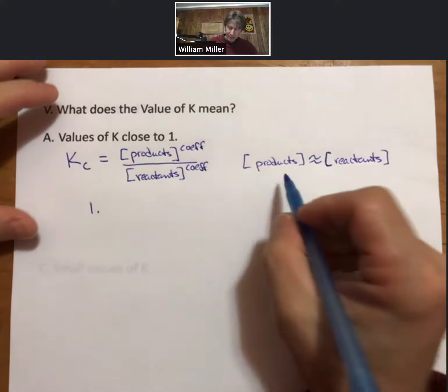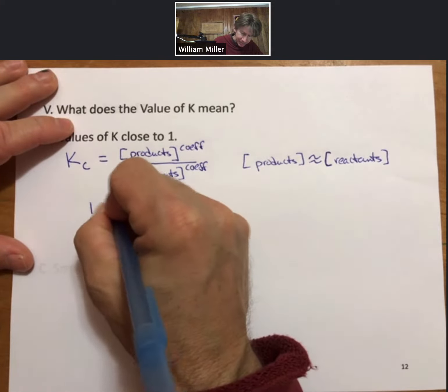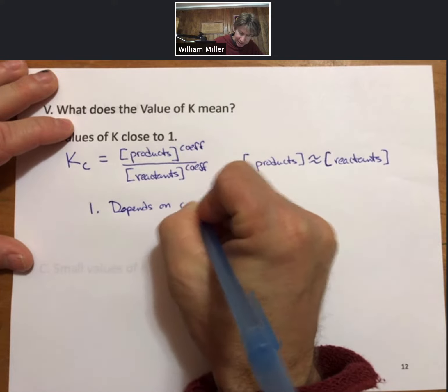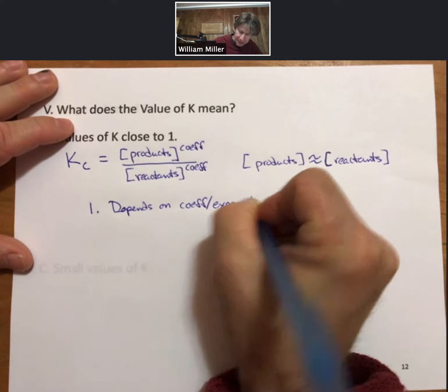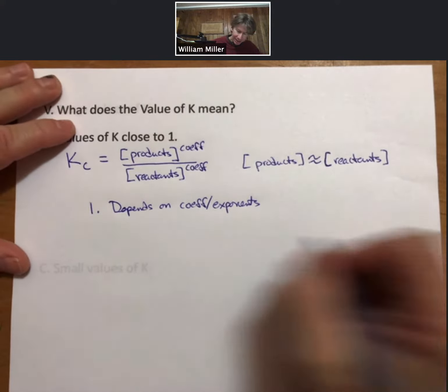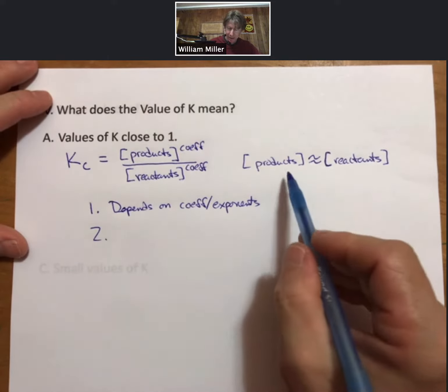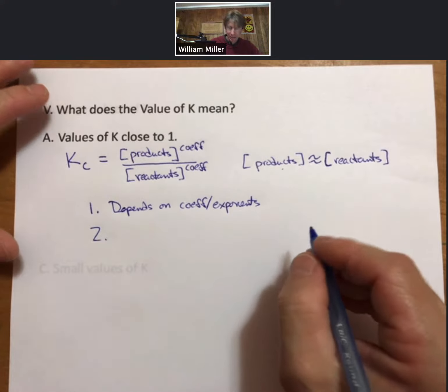The exact relationship depends on the exponents, on coefficients. We're just broadly painting our view of equilibrium constant values. What we will say is that there are significant concentrations of reactants and products.